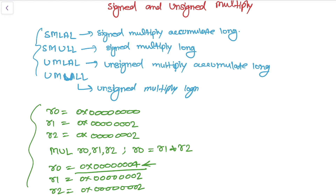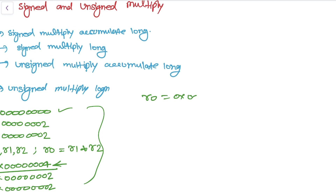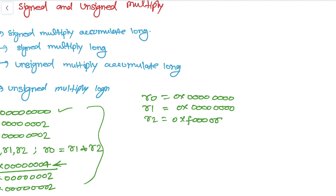Now let's take the same example using the unsigned multiply instruction. We are going to use UMULL. Let's take R0 = 0x00000000, R1 = 0x00000000, and R2 = 0xF0000002.